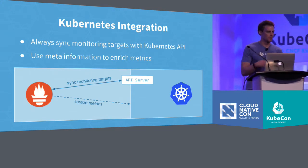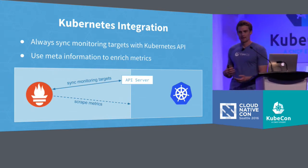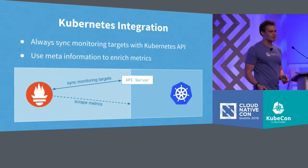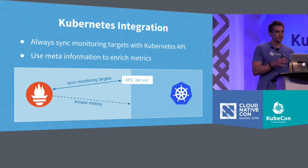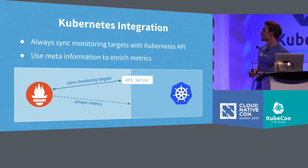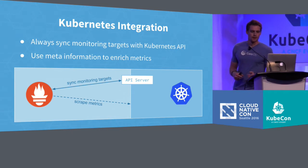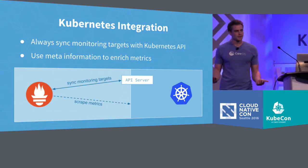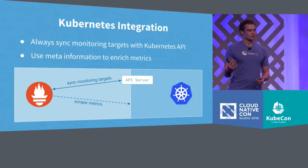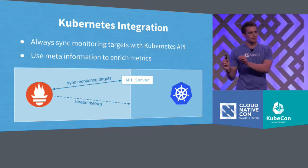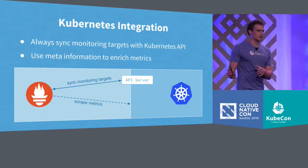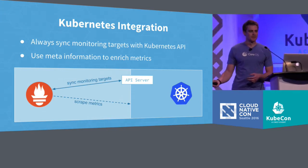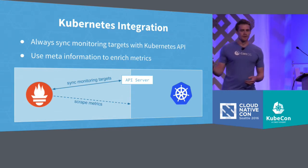Prometheus is quite good at modeling time series and helping you get this high-level overview while also allowing you to drill down. But now we have to solve the issue of having so many targets to monitor individually inside our cluster. We solve this by directly talking to the Kubernetes API server — we get an initial set of things that can be monitored, and then to deal with constant change, we place watches on the API server which notify us immediately as soon as anything changes. So if you scale your deployment and a new pod gets created, Prometheus will be immediately notified and can immediately start monitoring that pod.